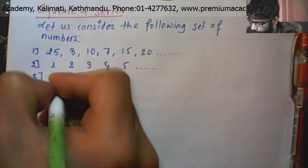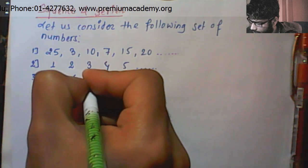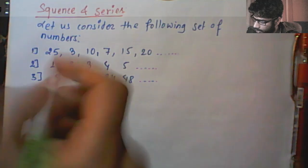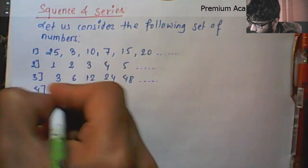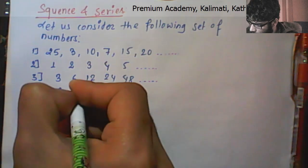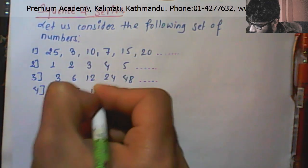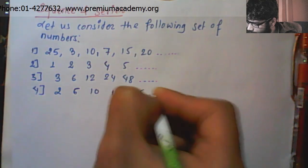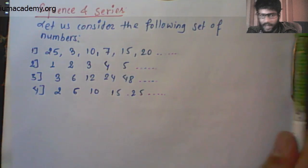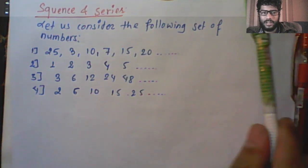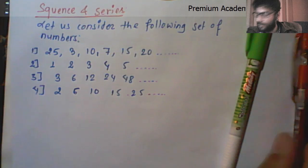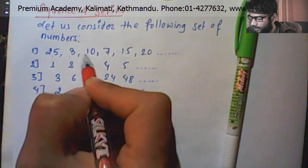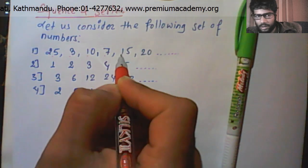Consider the set: 3, 6, 12, 24, 48. The next item: 10, 15, 25, then 10, then 7, then 15, then 20.